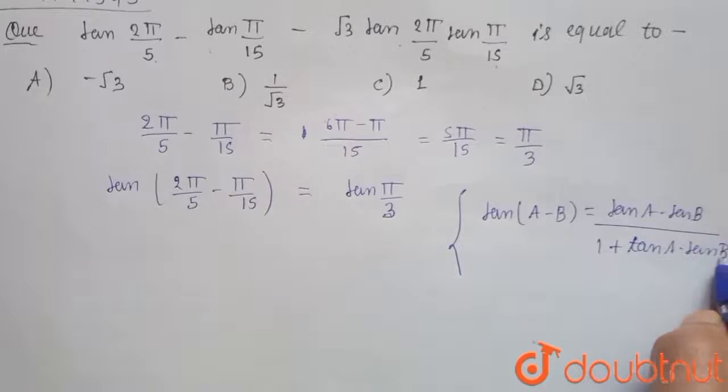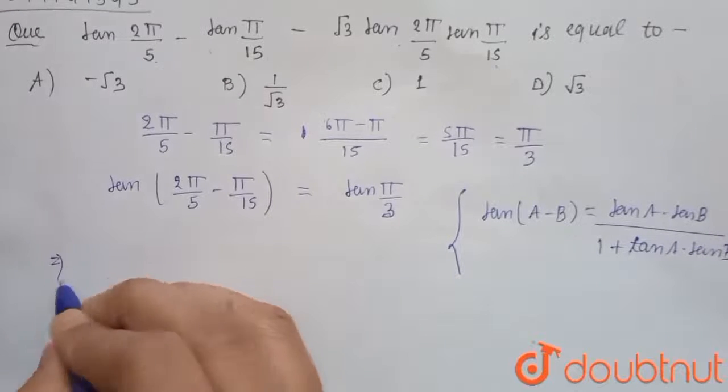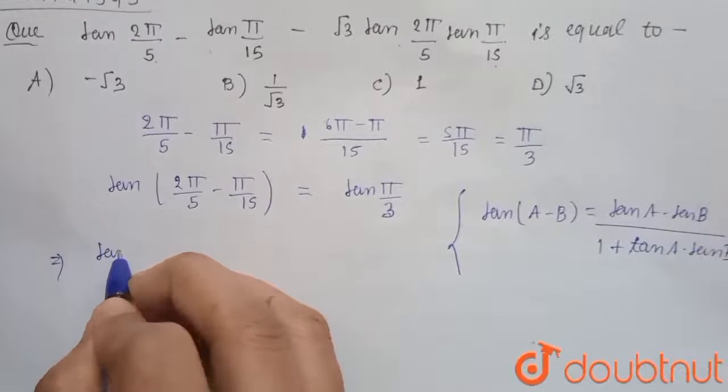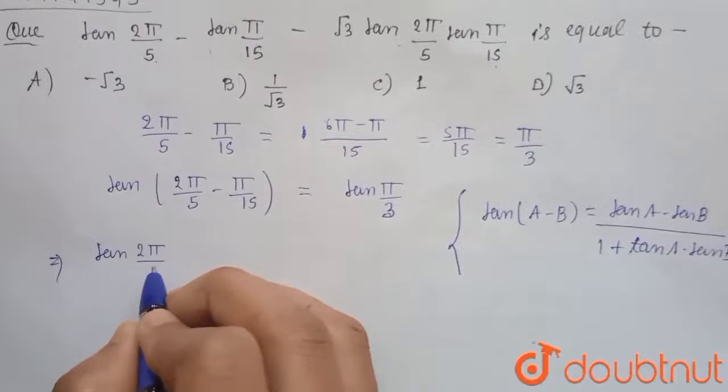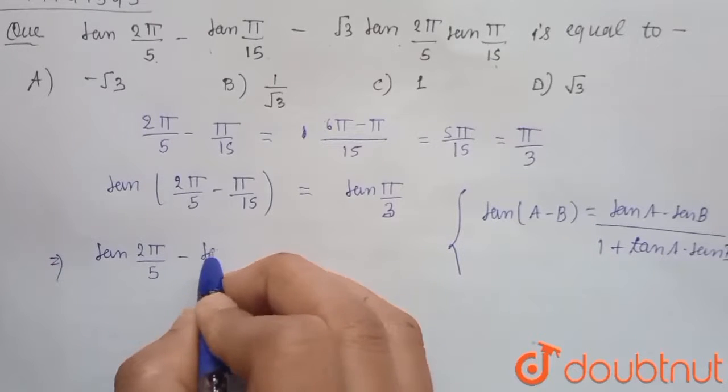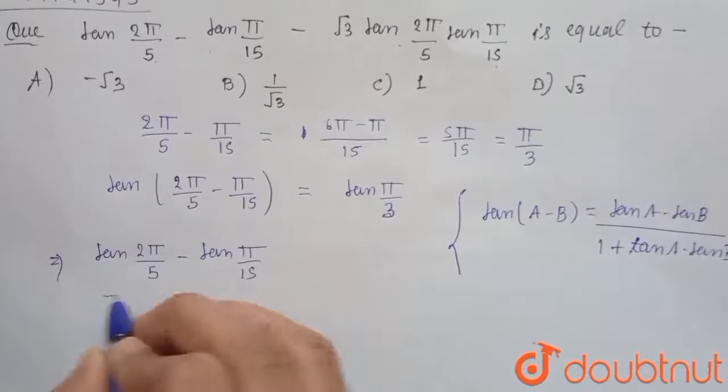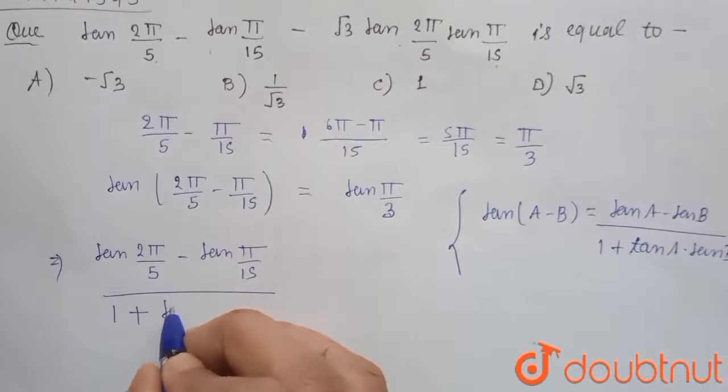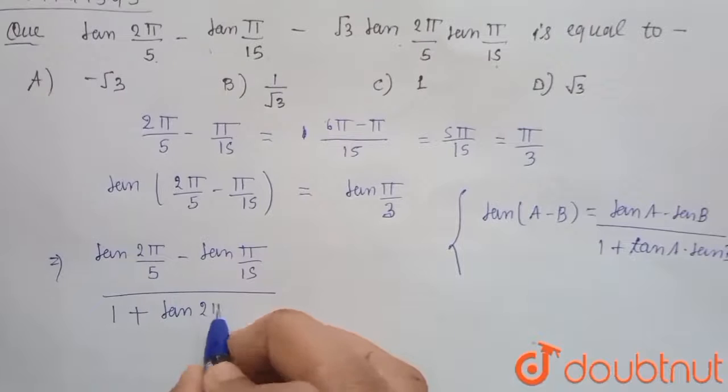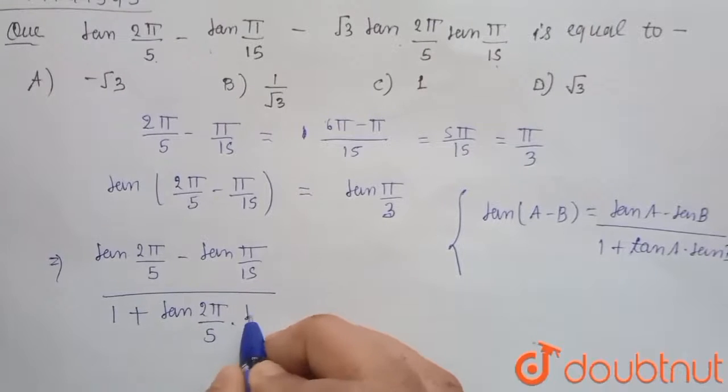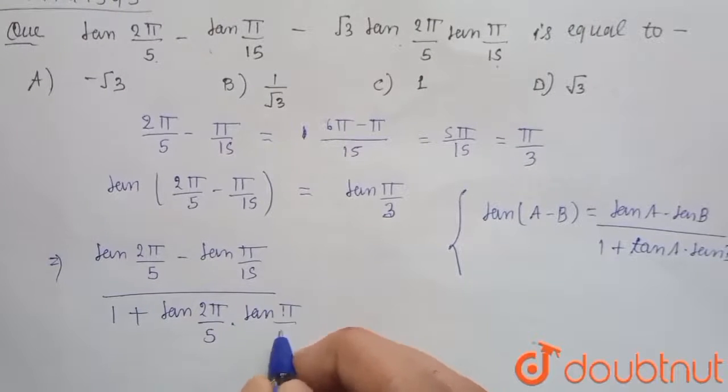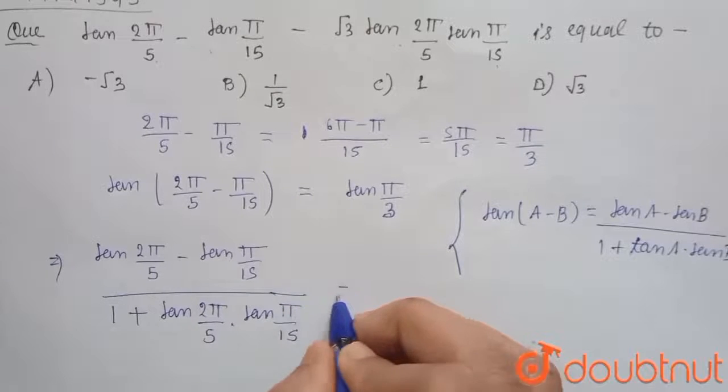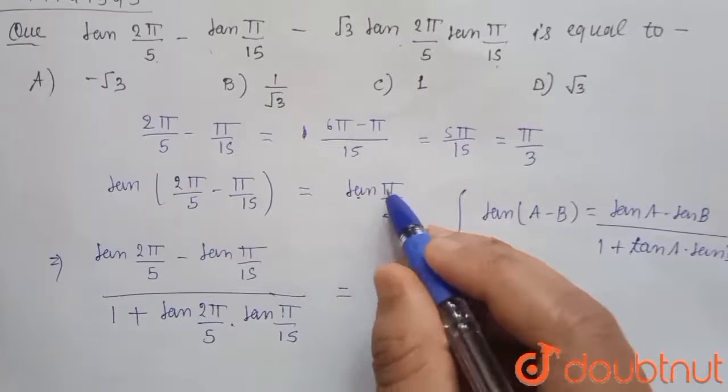plus tan 2π by 5 into tan π by 15) equals tan π by 3. We know that this is √3. So here when we cross multiply, we get tan 2π by